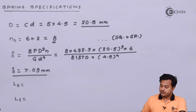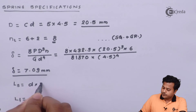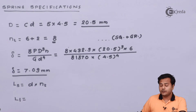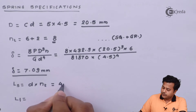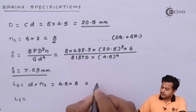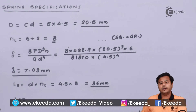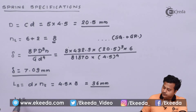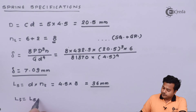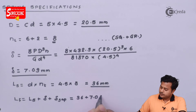The next specification is the solid length. We know that the solid length is given by the wire diameter multiplied by the total number of coils. With wire diameter 4.5 millimeters and total coils of 8, the solid length comes out to be 36 millimeters. At the end we have to find out the free length of the spring using the empirical relation, which gives us 36 plus 7.09 plus the total gap.